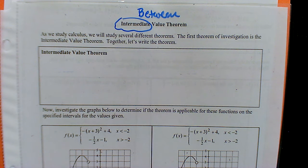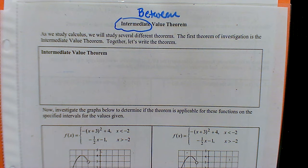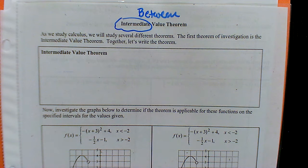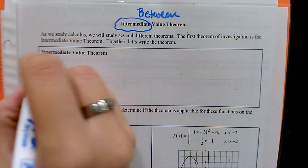Some school districts have an elementary school, an intermediate school, and then a high school — the intermediate school is literally between elementary and high school. So intermediate means between. We're going to write down the definition, and it's going to go right over your head at first, but we're going to talk about it.